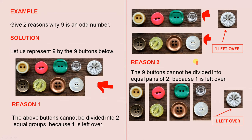Here is the second reason. The nine buttons cannot be divided into equal pairs of two because one is left over. One pair, two pairs, three pairs, four pairs. There are four pairs, but that only gives you eight, and there is one left over.